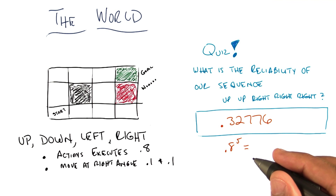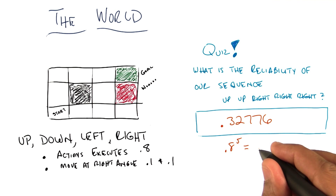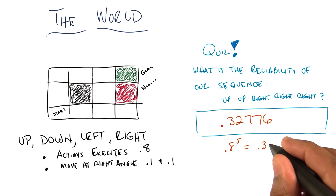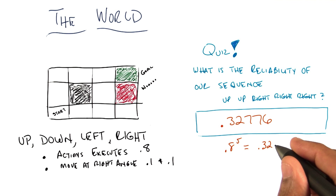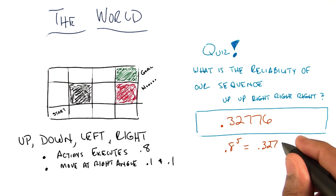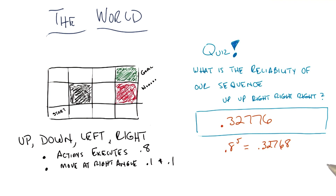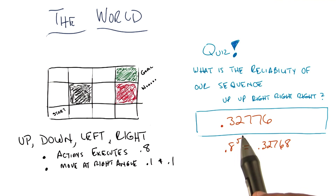Yep. And so 0.8 raised to the fifth power gives me the probability that that entire sequence will work as intended. Exactly. What is 0.8 to the fifth? 32,768 with a decimal point in front of it, because the power is a two. Wow, that is correct. But I noticed that 32,768 is not 32,776. No, they differ by a little smidge.